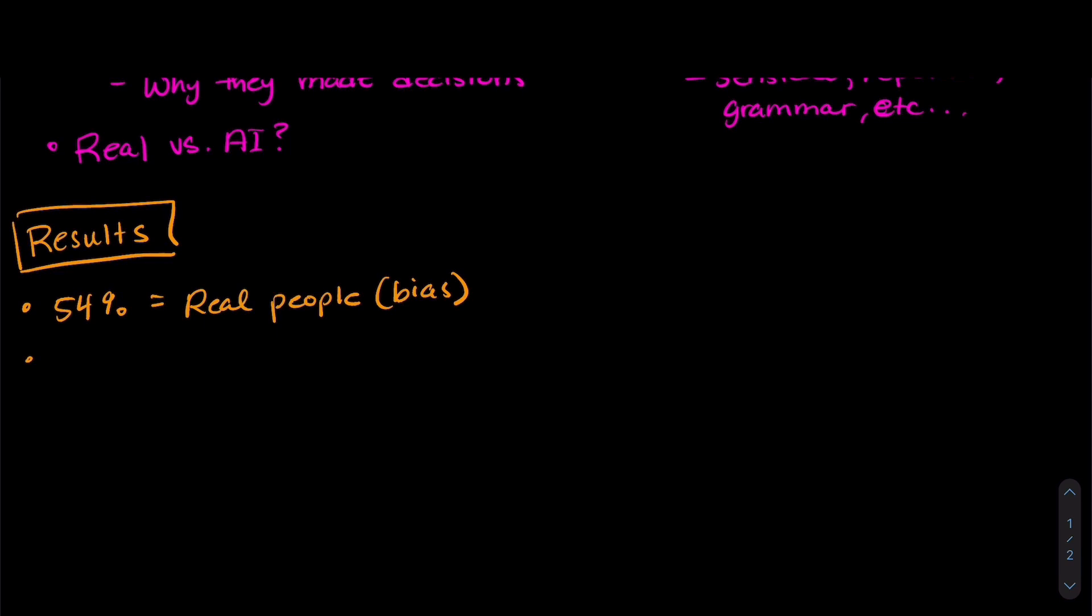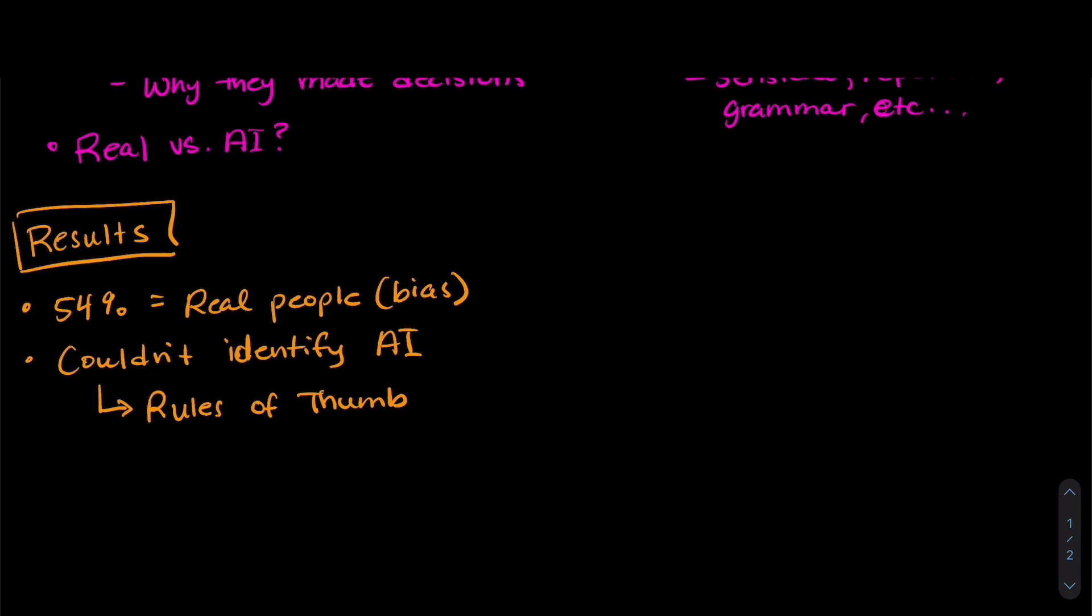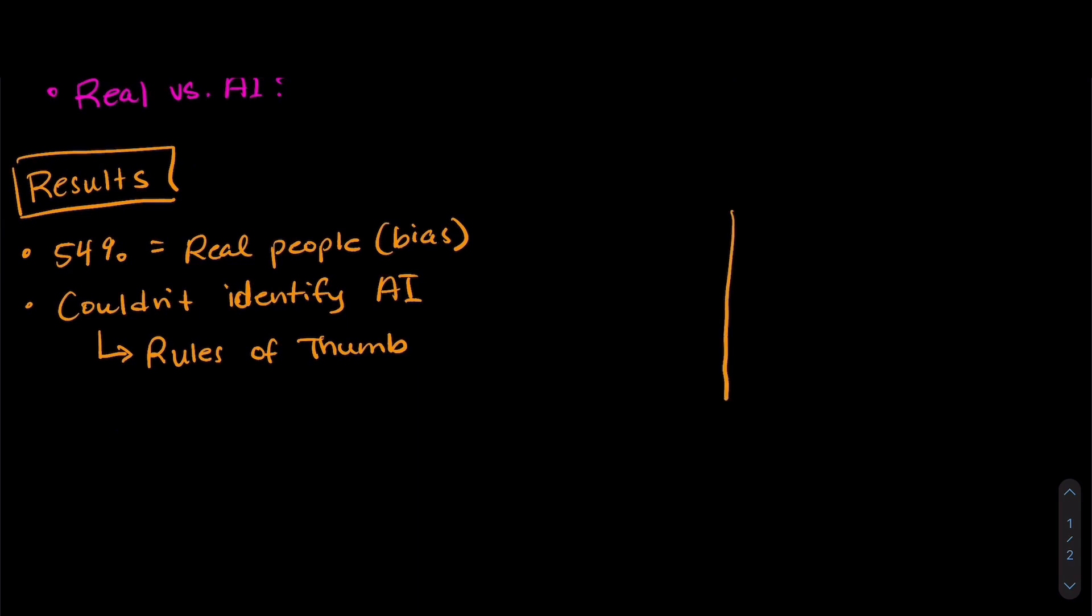Also, when they looked at a bio that was written by artificial intelligence, they couldn't identify that it was written by an AI. But they did have some rules of thumb that they made those decisions based on, even if they ended up being wrong. So let's look at what their data actually shows.